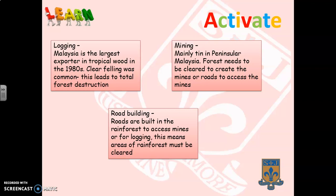Mining, particularly for tin in Peninsular Malaysia, is another cause. Forests need to be cleared to create the mines and access the resources. Areas of forest also need to be deforested to build roads to reach the mines. Road building is therefore a cause in its own right — once trees are cut down and need to be exported, roads must be built through the forest to transport them out.